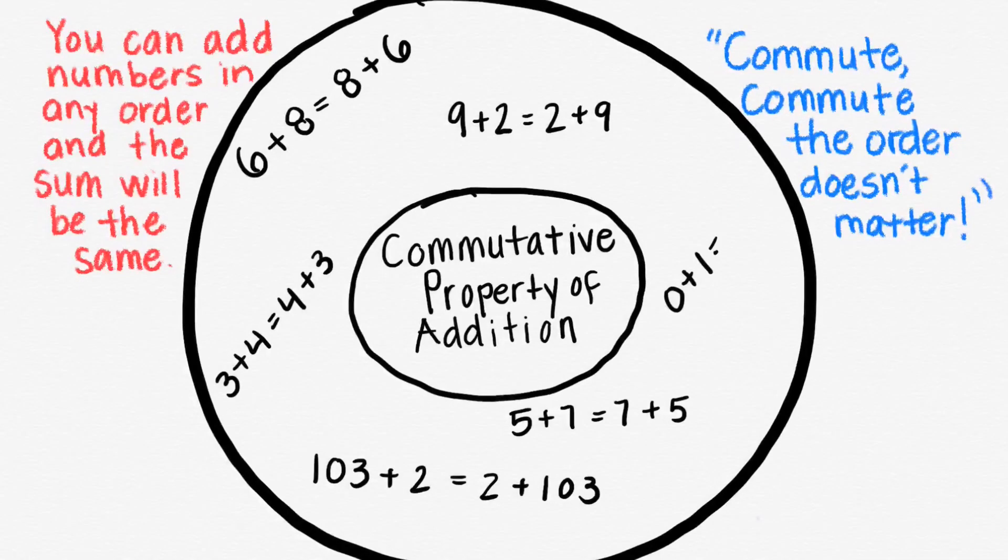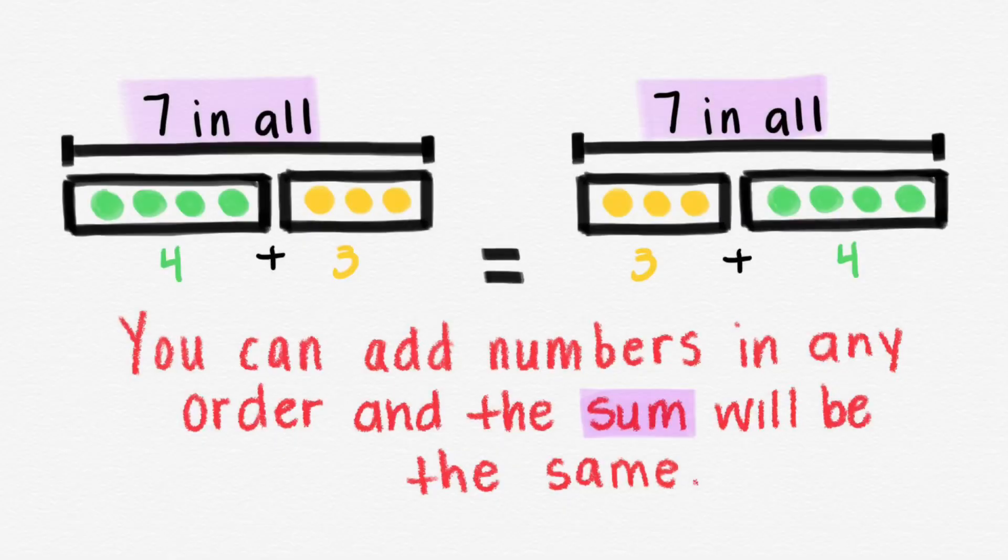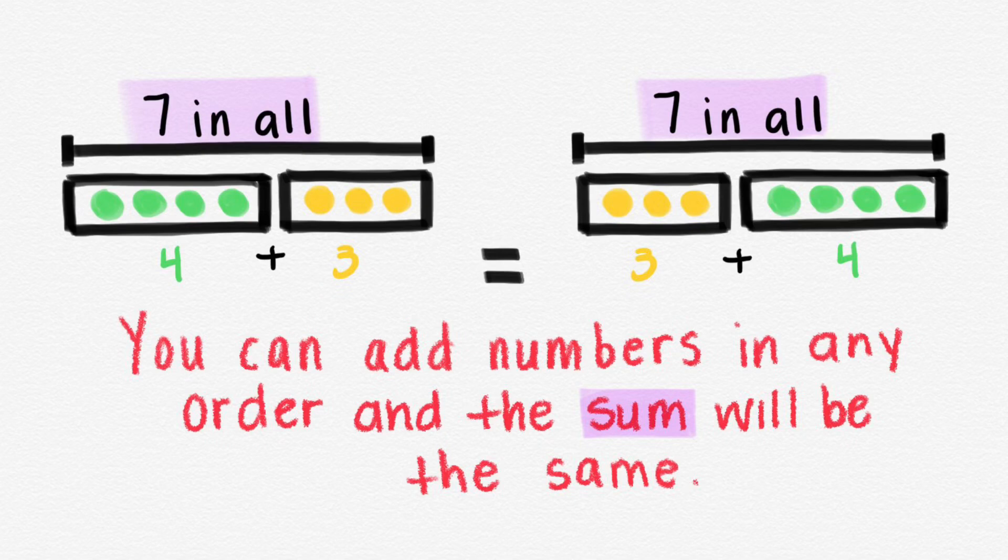0 plus 1 equals 1 plus 0. Remember you can add numbers in any order and the sum will be the same.